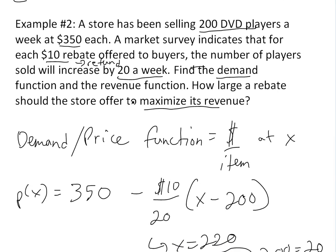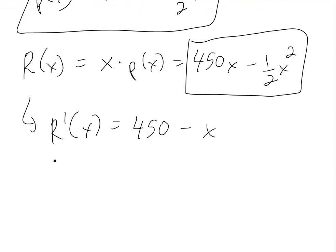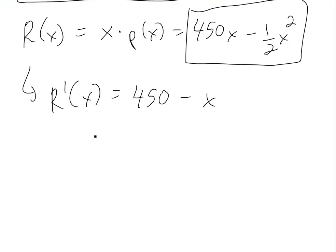The second part of the question: how large of a rebate should the store offer to maximize revenue? We use simple calculus and the first derivative test. Taking the derivative: R'(x) = 450 minus X, using standard calculus and power rule. For the first derivative test, we find critical points by setting it equal to zero. If R'(x) = 0, then X = 450.